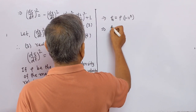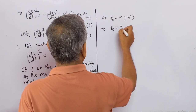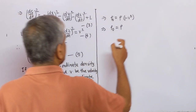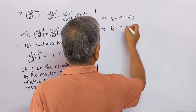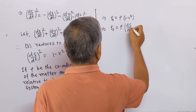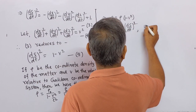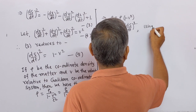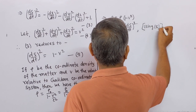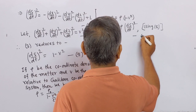This implies that ρ₀ = ρ(1 − v²) = ρ · (ds/dt)², using equation (5) and equation (4). This is equation (6).